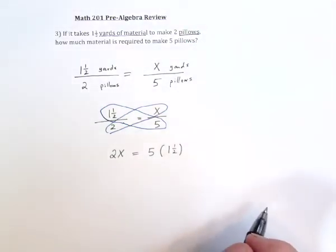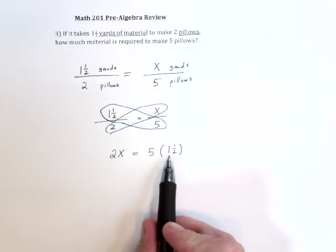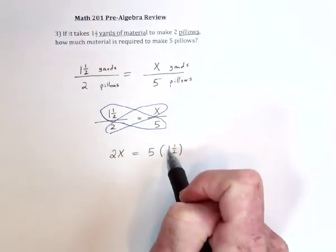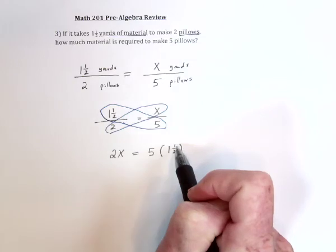So let's see. With one and a half, I could either make this into an improper fraction. So that would mean multiply this direction, two times one is two, add this direction. This would be three halves.